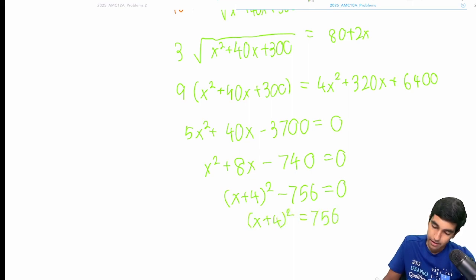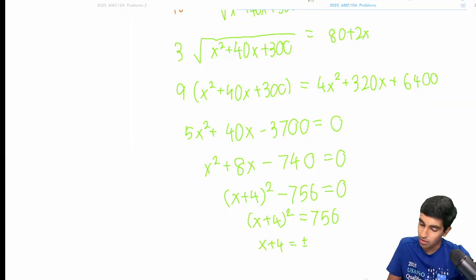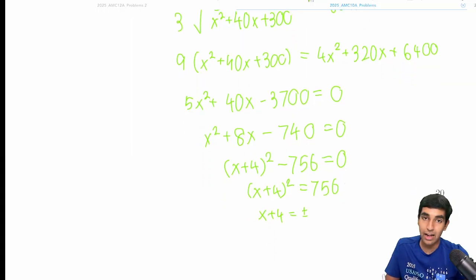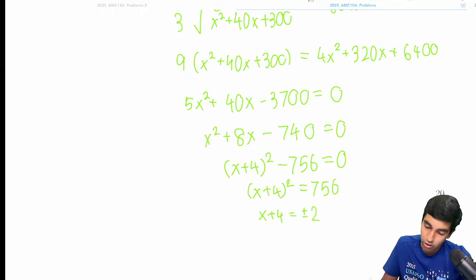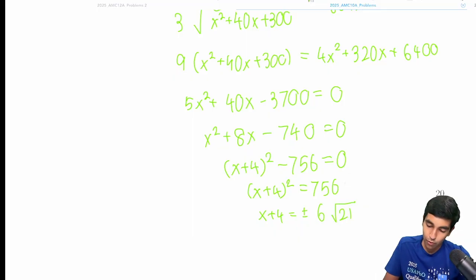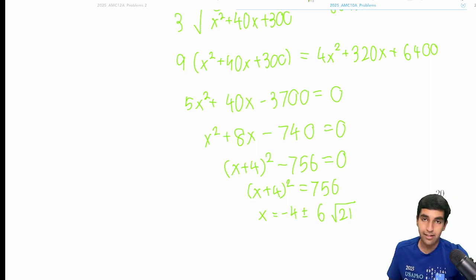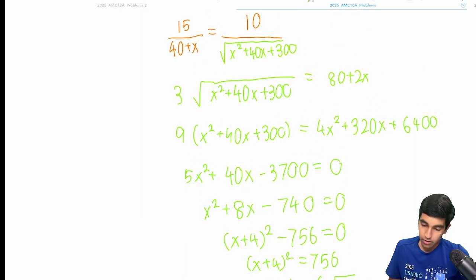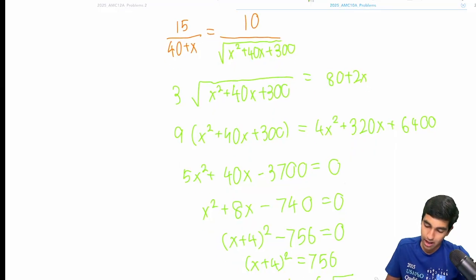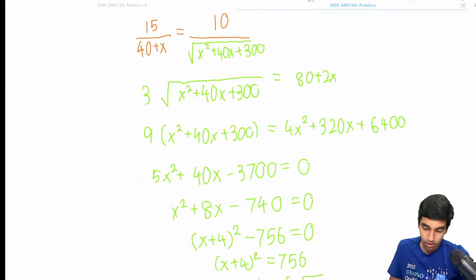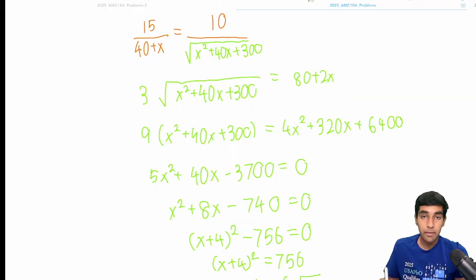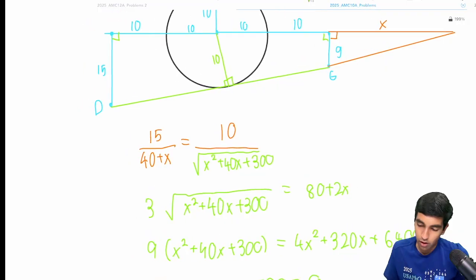Using a difference-of-squares / completing-the-square approach: (x + 4)² − 756 = 0, so x + 4 = ±√756. Now √756 = √(4 · 189) = 2√189 = 2√(9 · 21) = 6√21. So x = −4 ± 6√21. Since x must be positive, we take x = 6√21 − 4. That is our value of x.